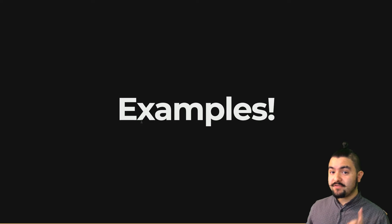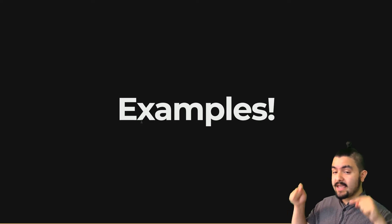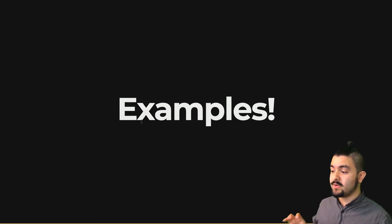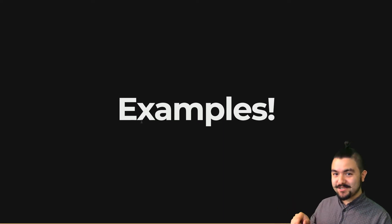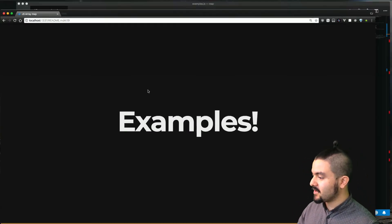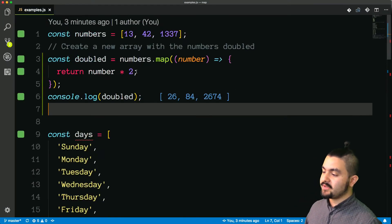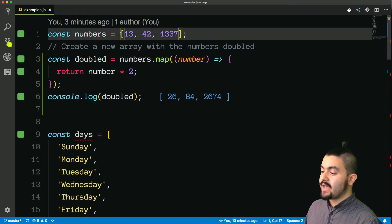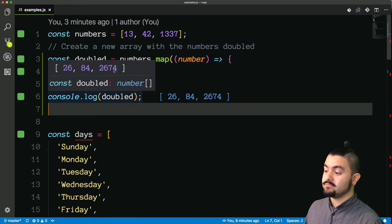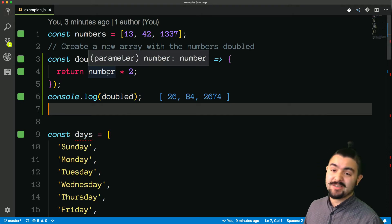Let's see some examples. In the description below is the repo and I have all of the examples that I'm about to do and you can try them yourself. So if you want to give them a try before I do, pause the video, go clone the repo and give it a try. So we see our first example here — this is what I showed in the slides. We start off with an array of numbers, we have a map that will multiply each number by two, and then we get the resulting array.